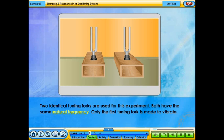Two identical tuning forks are used for this experiment. Both have the same natural frequency. Only the first tuning fork is made to vibrate. What will happen if the two tuning forks are placed near to each other? Click on the start button.